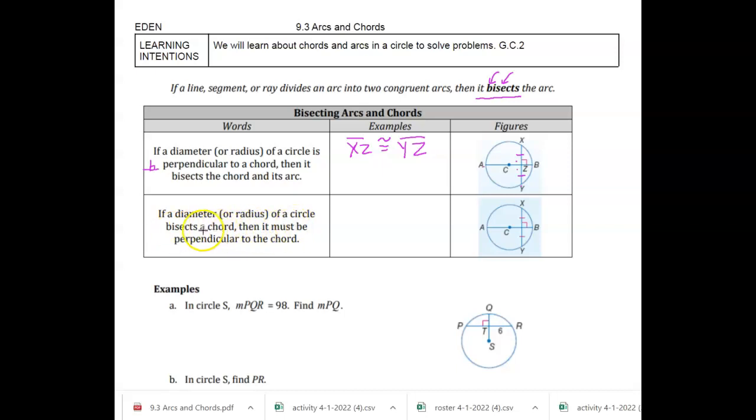If a diameter or radius of a circle bisects a chord, it must be perpendicular to a chord. So if we didn't have that little shape also drawn in, if we knew that these two lengths were equal, then we could say that they were perpendicular. Okay, that's the idea.